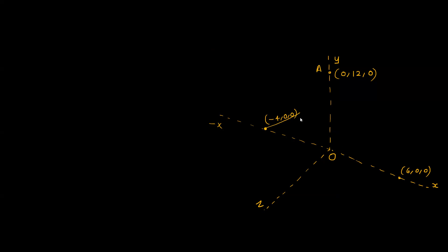This is the point on the X axis: minus 4, 0, 0. This is the 3-meter distance on the Z axis — this is the negative side of the Z axis. This is the parallel direction and the opposite side. The negative value is minus 4 on the X, the Y value is 0, and minus 3 on the Z.